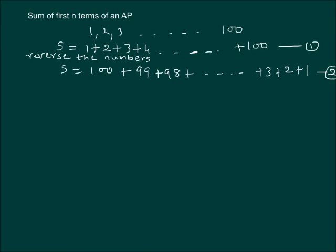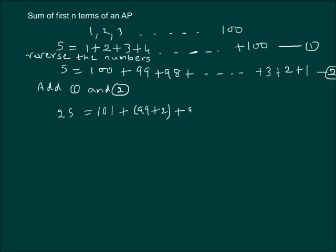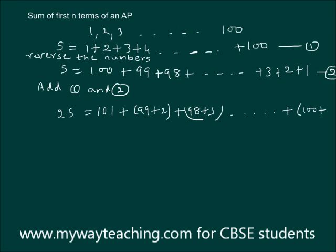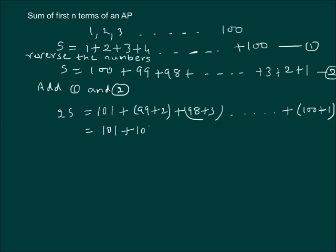Now if we add equation 1 and equation 2, each pair of corresponding terms sums to 101: for example, 1 plus 100, 2 plus 99, 3 plus 98, and so on, with the last pair being 100 plus 1. We get 101 plus 101 plus 101, and there are 100 such terms.